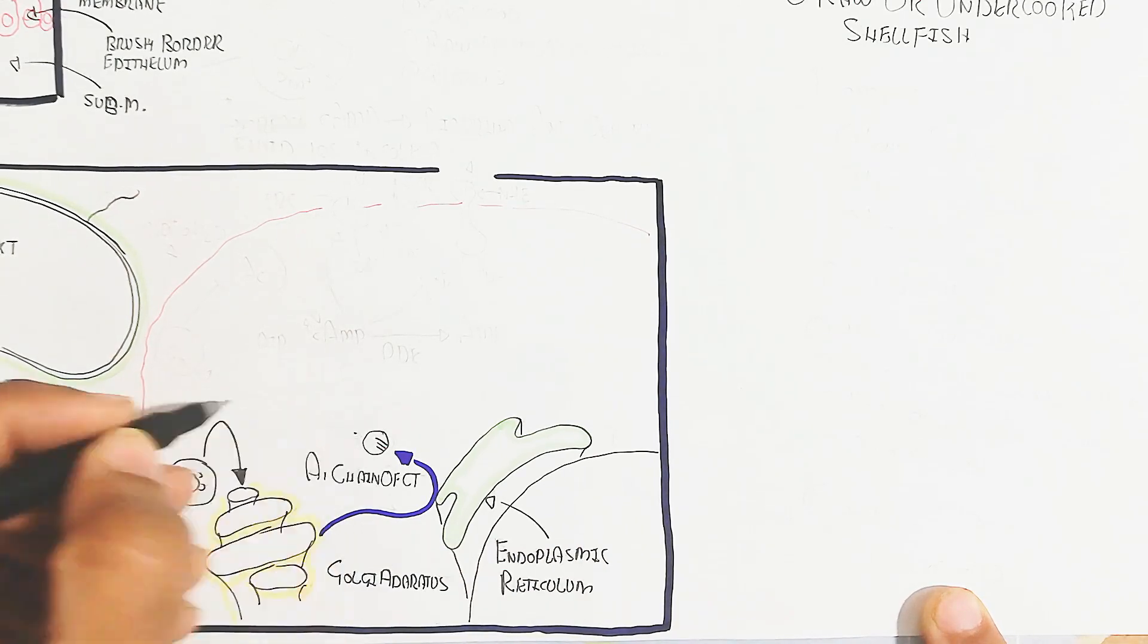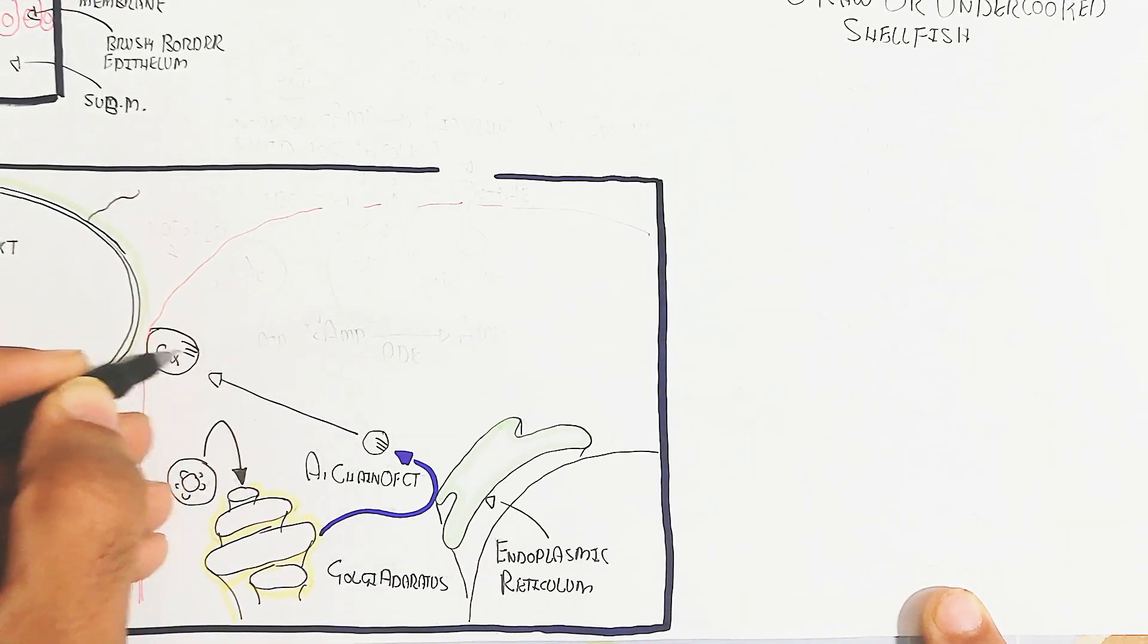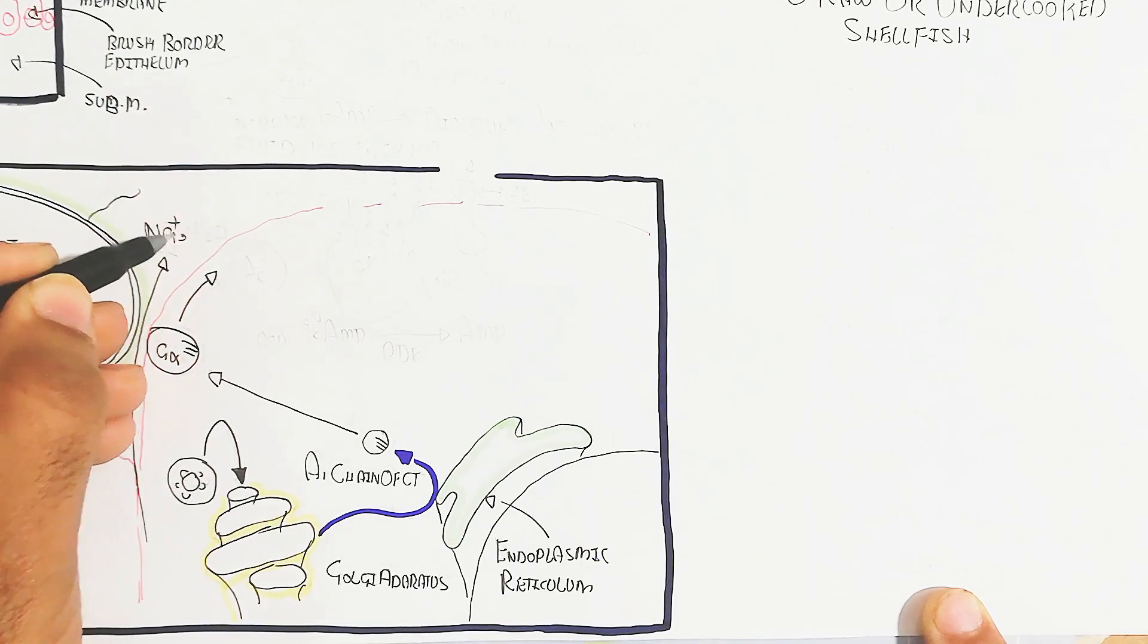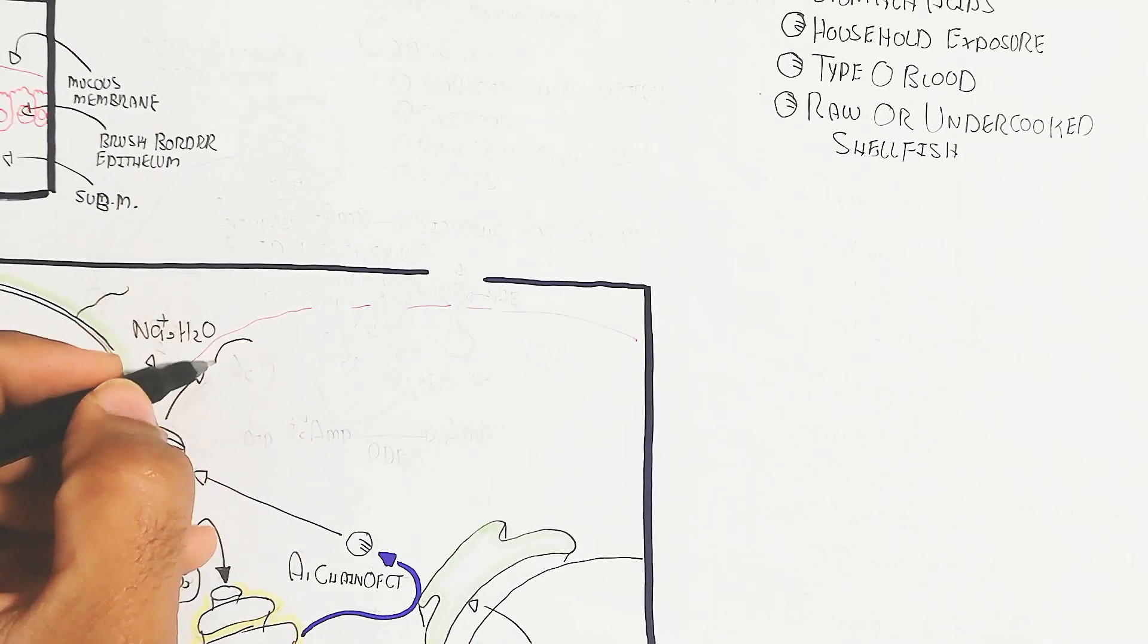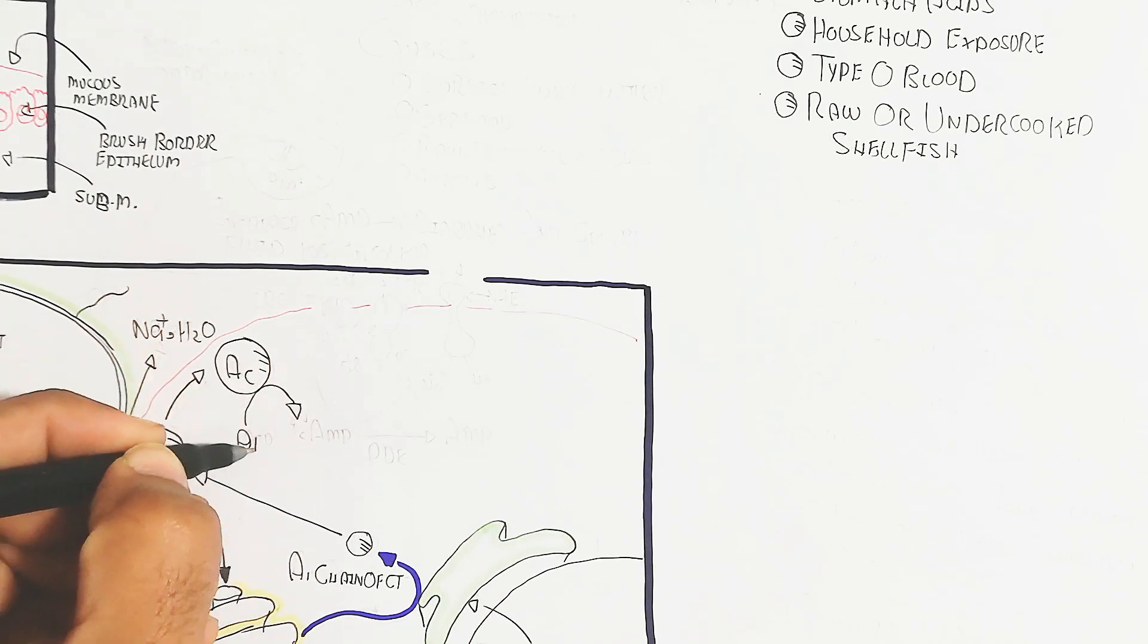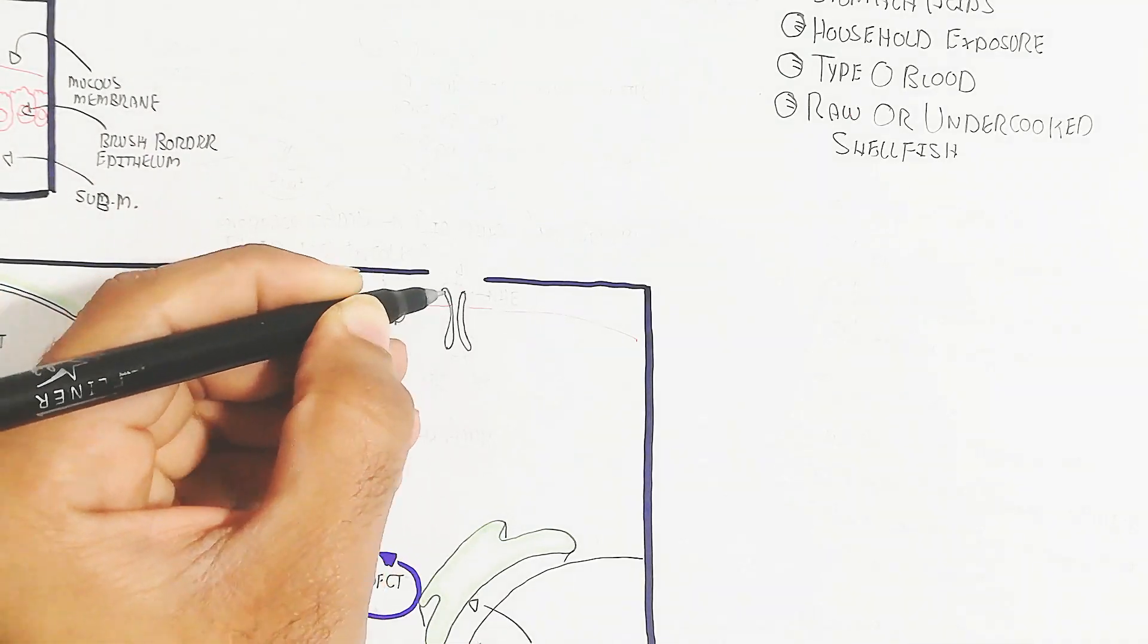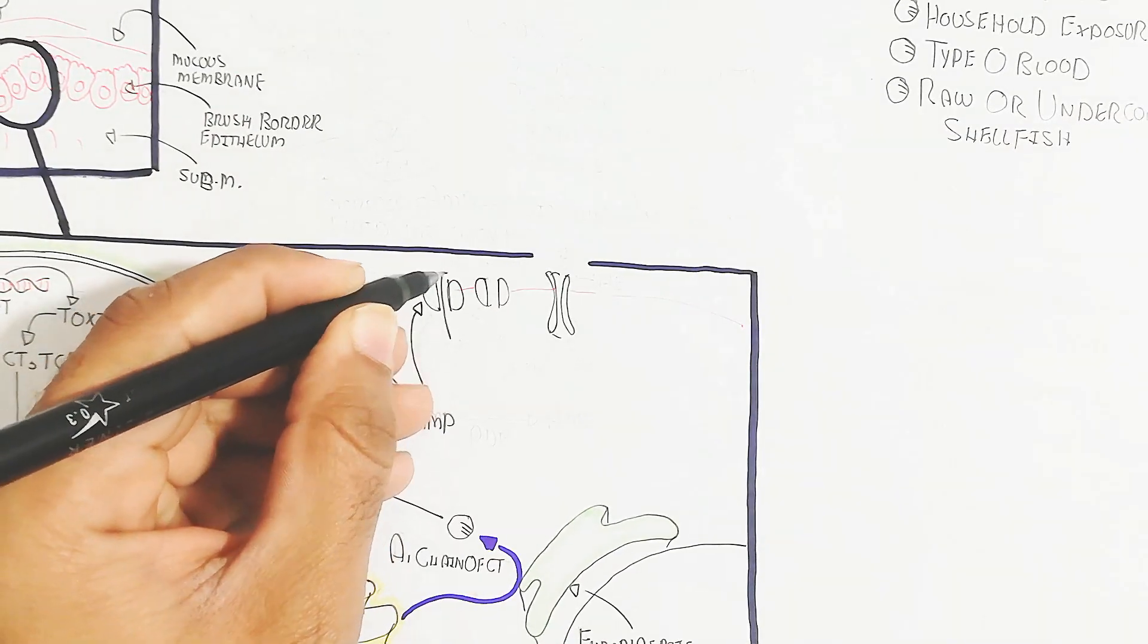the G-coupled protein alpha, leading to adenylate cyclase triggering, which converts ATP into cyclic AMP. As a result, sodium and water will move out into the lumen, leading to diarrhea because water content increases more and more.